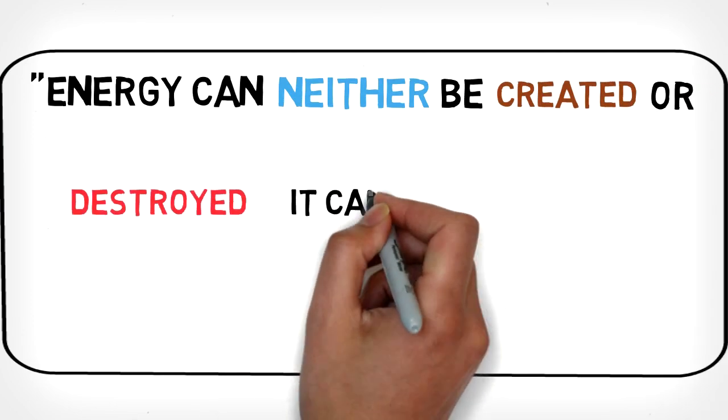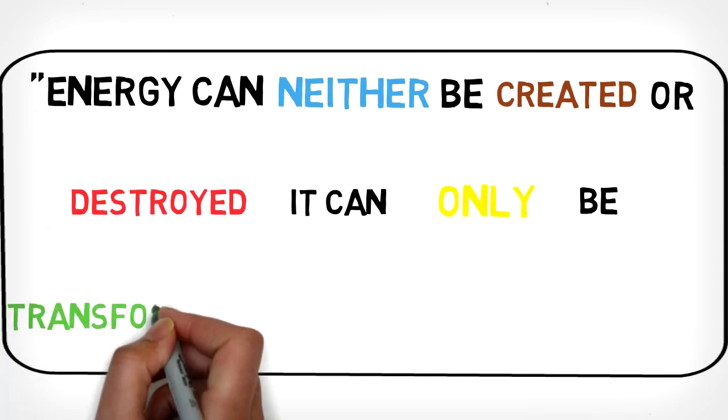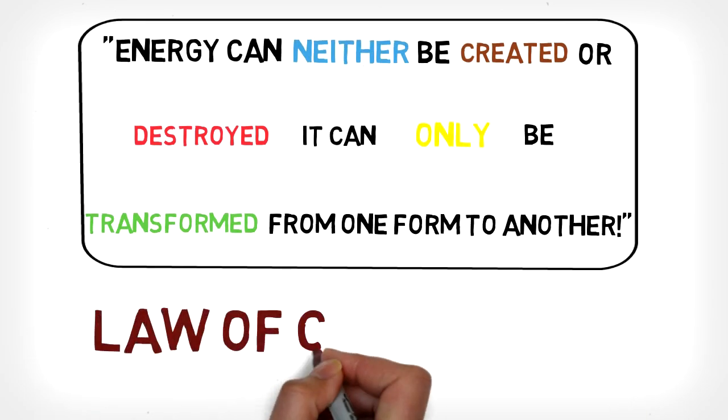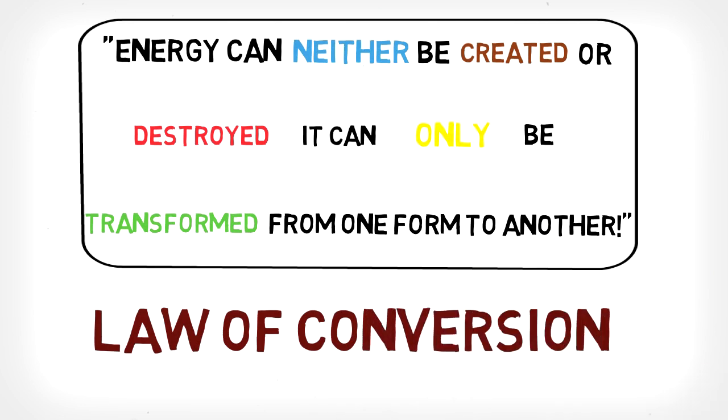It can only be transformed from one form to another. This is called the law of conversion, and it means that to be able to use energy, we need to transform it from one form to another.